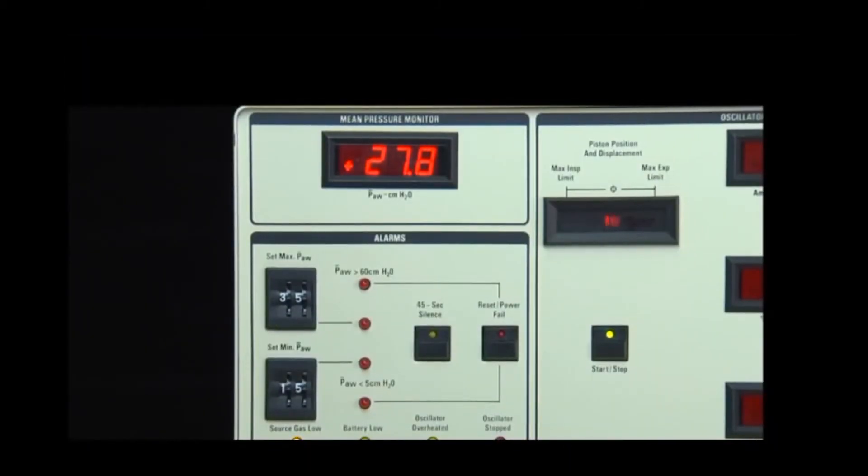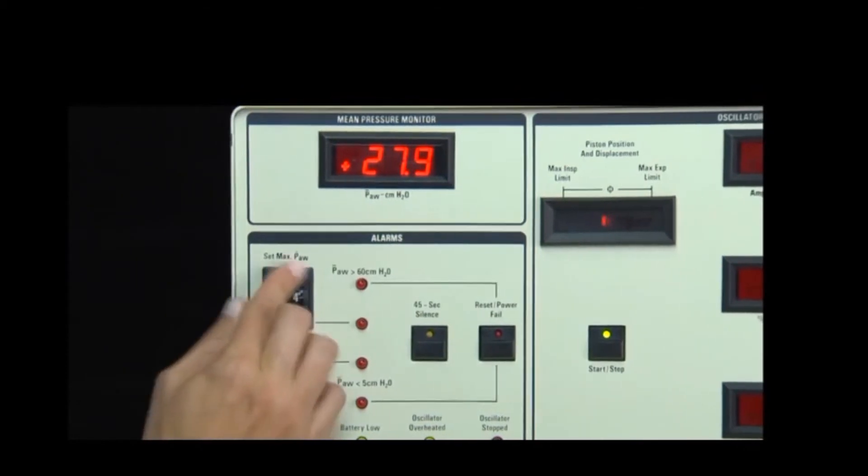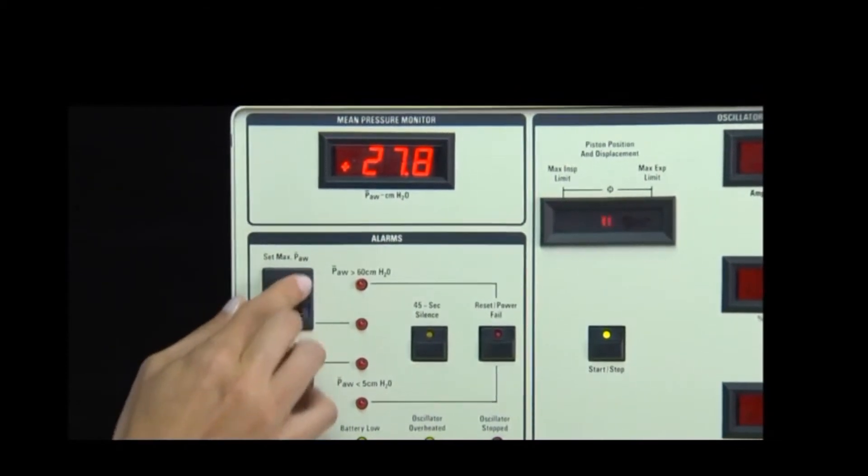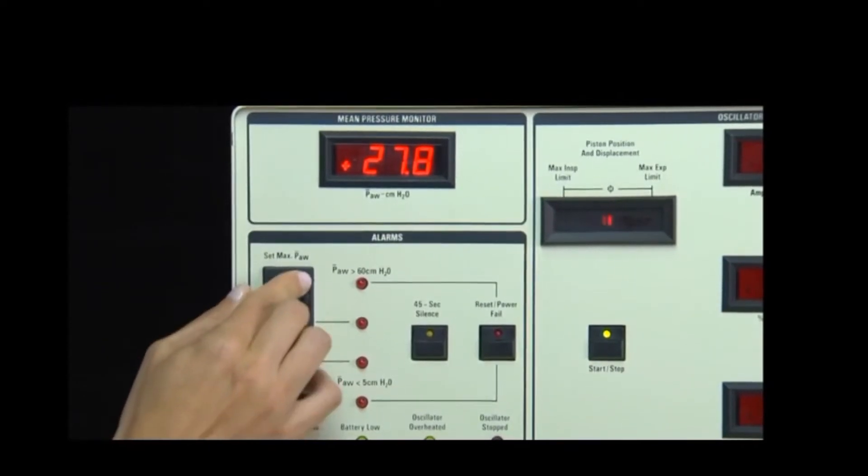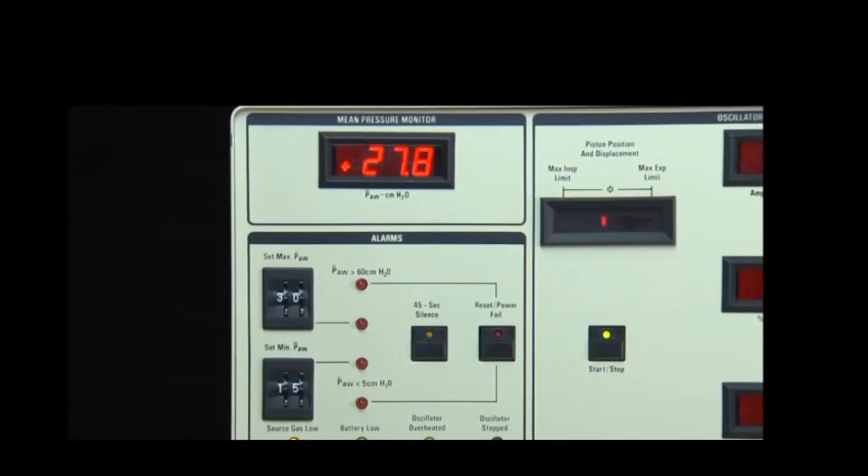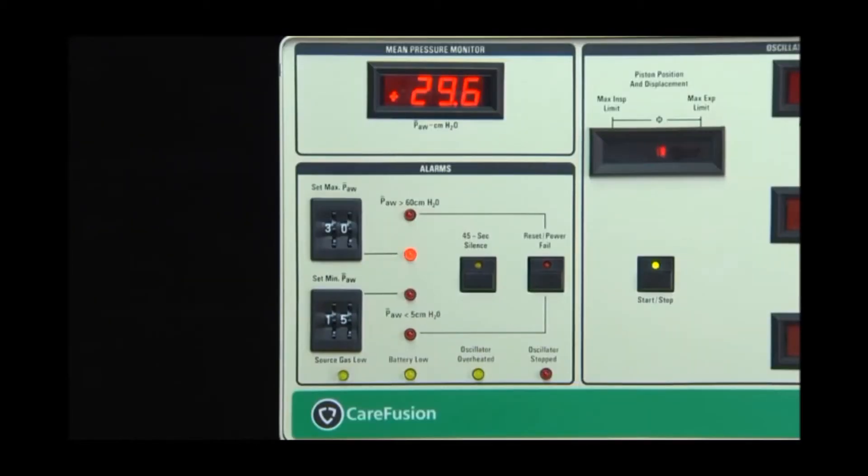Thumbwheel controls are used to adjust the set maximum and set minimum mean airway pressure alarms from 0 to 59 centimeters of water pressure. The set maximum mean airway pressure will provide an audible and visual signal when the alarm threshold has been reached. Additionally, activation of this alarm will trigger the auto-limit system. This system will briefly open the limit valve on the inspiratory limb of the circuit. The circuit pressure will fall by approximately 12 centimeters of water pressure.